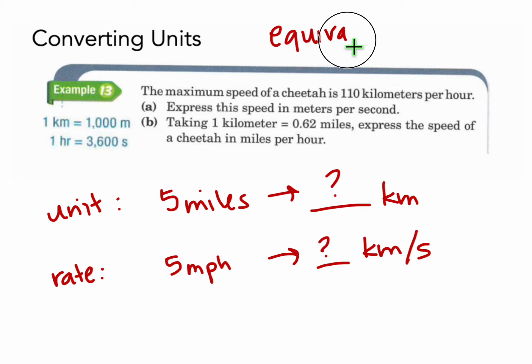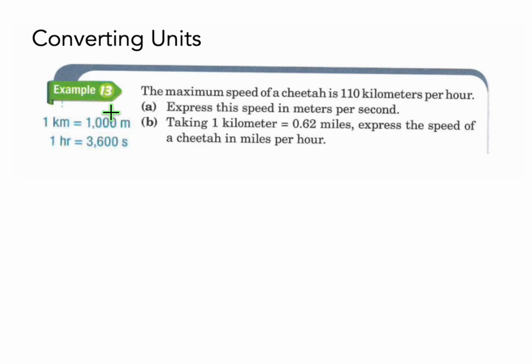Here's Example 13 on converting units. We have the maximum speed of a cheetah, which is 110 kilometers per hour. We need to express that speed in meters per second. The second question tells us that one kilometer is equivalent to 0.62 miles, and asks us to express the speed of the cheetah in miles per hour.